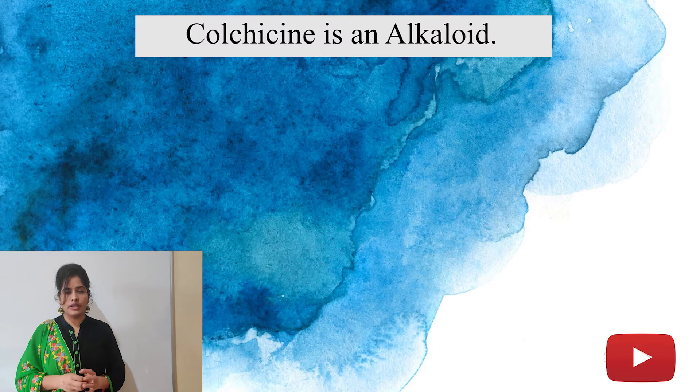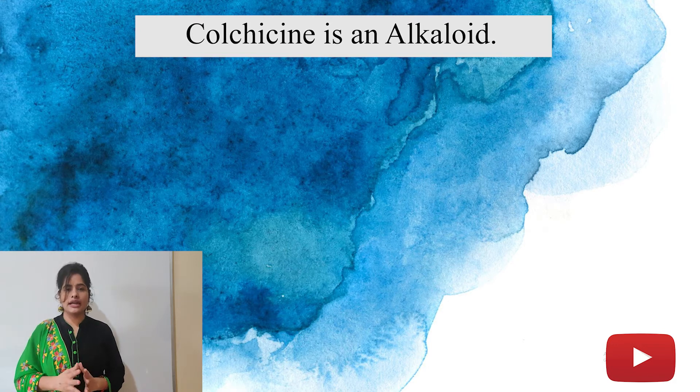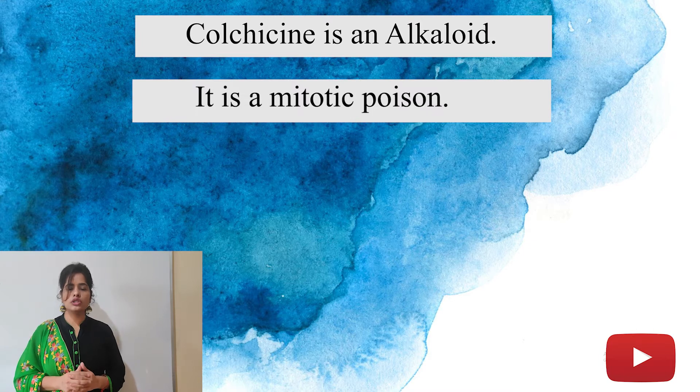Colchicine is a chemical and this chemical belongs to a chemical group called alkaloid. What is colchicine? That is an alkaloid. Apart from that, colchicine is also known as mitotic poison.